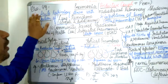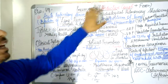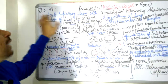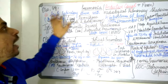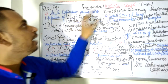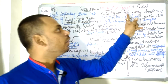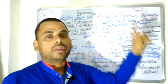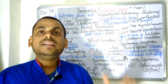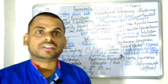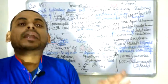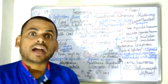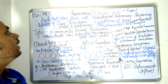One more definition: pneumonia can commonly be looked upon as an acute respiratory illness with radiological pulmonary shadowing. So when we look at the radiograph of the patient, there is pulmonary shadowing that can occur in the lungs.